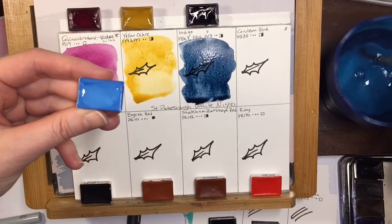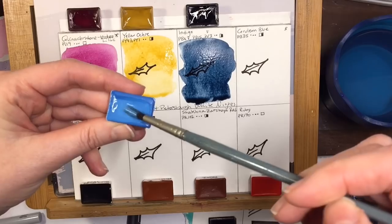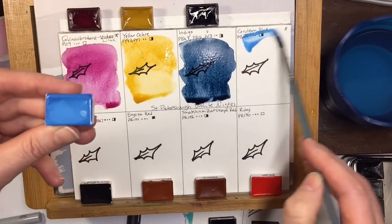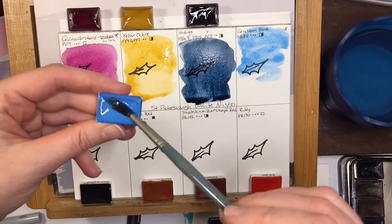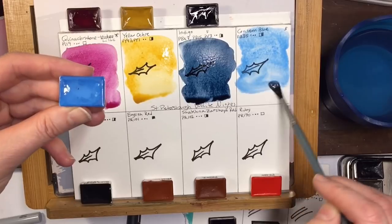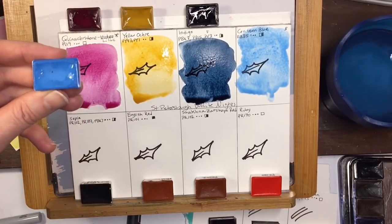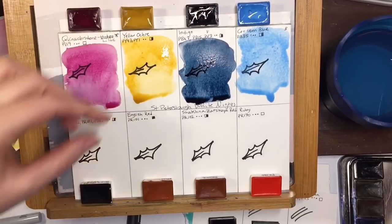Oops, I want to totally wash that out. This is the ceruleum blue that I was curious about. It's fairly opaque. I can see it useful for skies. A little bit granulating there. Very nice.